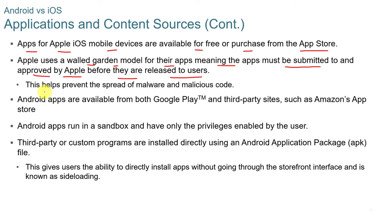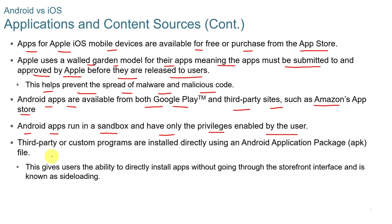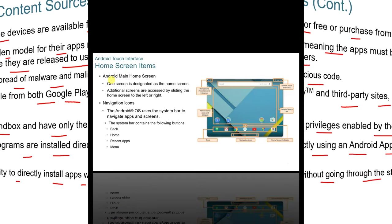Apple's walled garden model helps prevent the spread of malware and malicious code. Android apps are available from both Google Play and third-party sites such as Amazon's App Store. Android apps run in a sandbox and have only privileges enabled by the users. Third-party or custom programs can be installed directly using an Android Application Package or APK file, which is known as side loading.